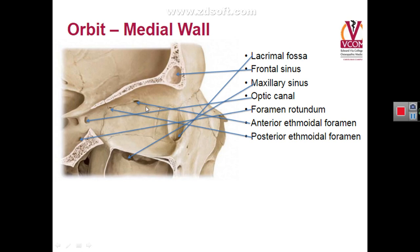The medial wall of the orbit is formed from posterior to anterior by the body of the sphenoid, the orbital plate of ethmoid, the lacrimal bone, and the frontal process of maxilla. Anteriorly there is a lacrimal groove formed partly by the frontal process of the maxilla and partly by the lacrimal bone. This lacrimal groove contains the lacrimal sac and inferiorly opens into the nasal cavity via the nasolacrimal duct. That is why when someone is crying, lacrimal fluid accumulates in the lacrimal sac and passes through the nasolacrimal duct into the nose.